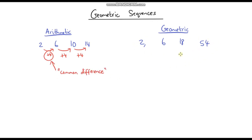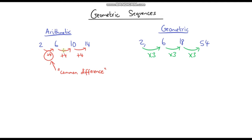If we look at this sequence over here, the first two terms are identical but the third term is 18 instead of 10. To go from 2 to 6 we were adding 4, but we can also say we're multiplying by 3, because 2 times 3 gives us 6. The same happens from 6 to 18, we're multiplying by 3, and likewise from 18 to 54. So instead of adding the same amount each time, we're multiplying by the same amount each time — that's what gives us a geometric sequence, and this is called the common ratio.